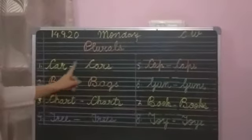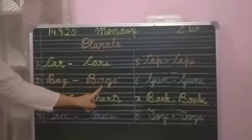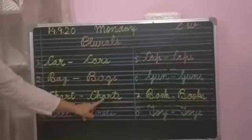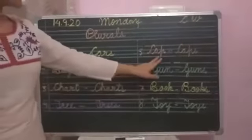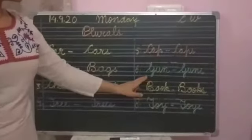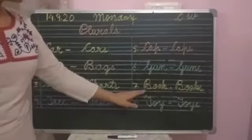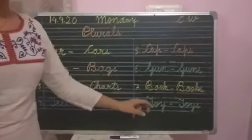Plurals. Car, cars. Bag, bags. Chart, charts. Tree, trees. Cap, caps. Gun, guns. Book, books. Toy, toys.